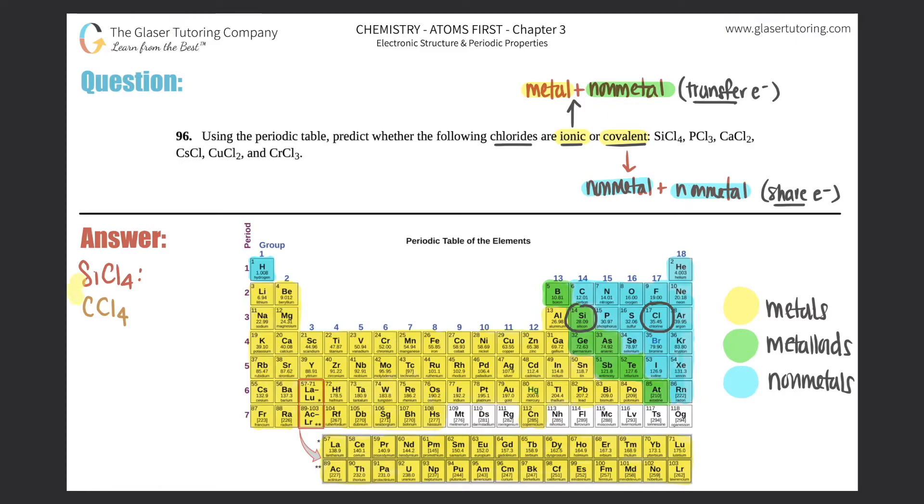So would SiCl4 be an ionic bond or would it be a covalent bond? In this case, it would actually be a covalent bond. Remember, metalloids both have metal and non-metal properties. But silicon, especially in this case, reacts just like CCl4. And since carbon is a non-metal, silicon will take that non-metal property. So SiCl4 will be a covalent compound. And that gets rid of the first one.